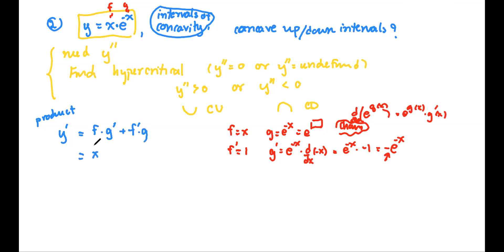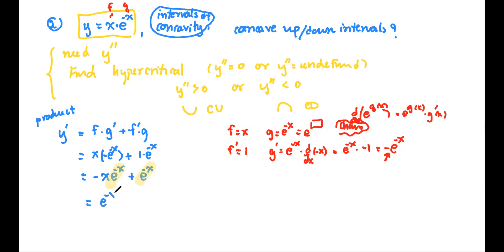Substituting: f is x, g prime is negative e to the negative x, plus f prime which is one times g which is e to the negative x. Rewriting: negative x e to the negative x plus e to the negative x. I see the common factor e to the negative x, so y prime equals e to the negative x times one minus x.